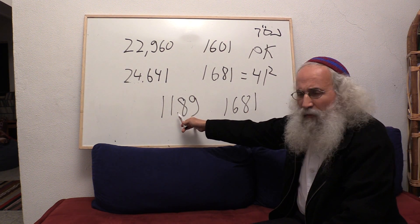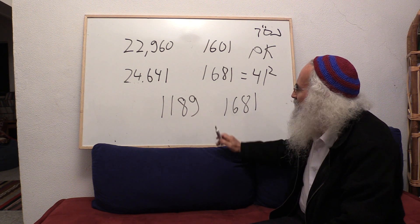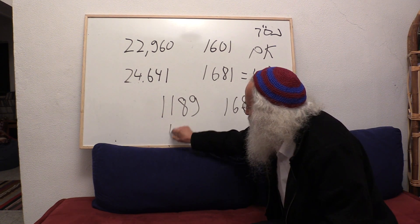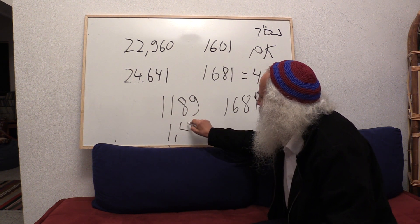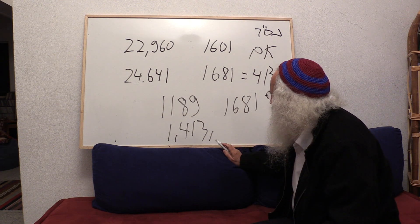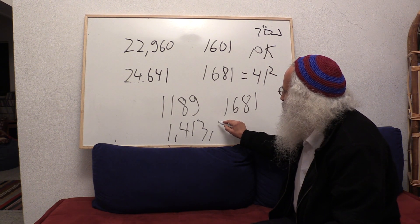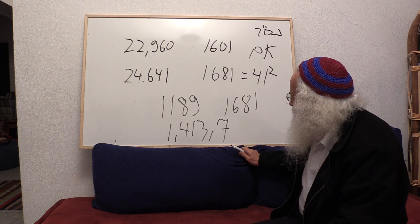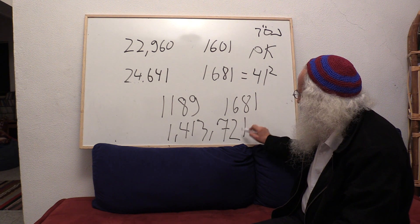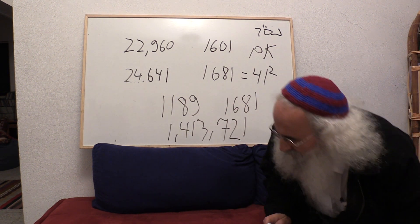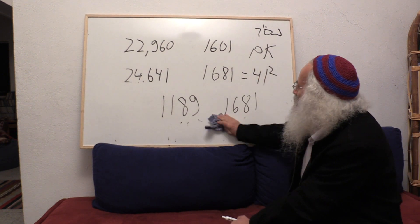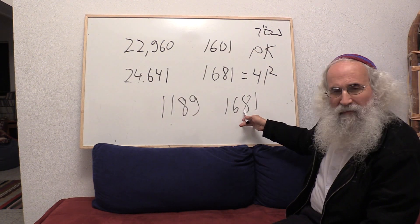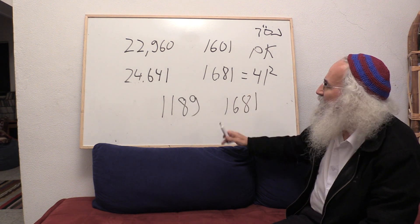The square of 1189 will equal the triangle of 1681, which will be 1,413,721. So this is a very rare couple of numbers. And this number couples together with Yeshua because this number represents the 41st generation. What is this number?